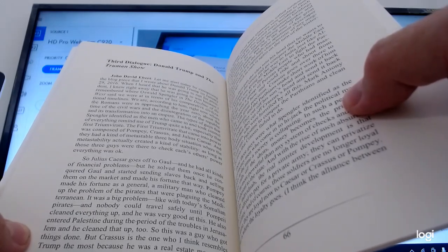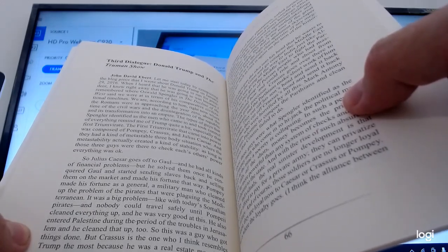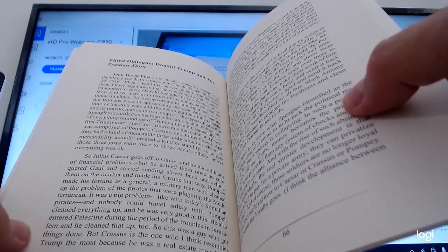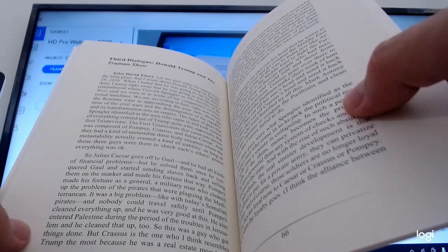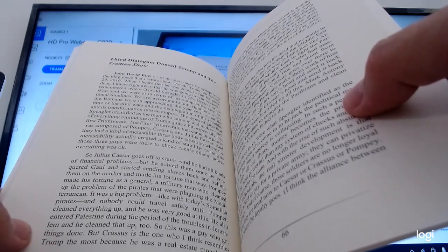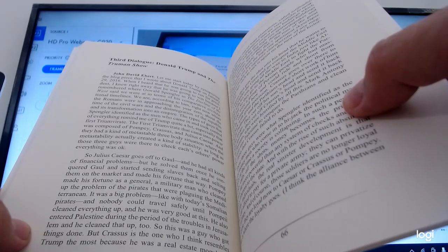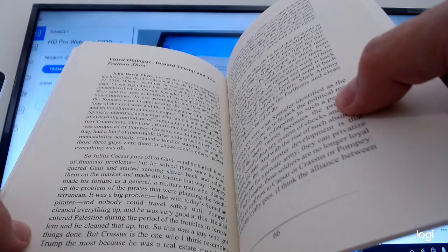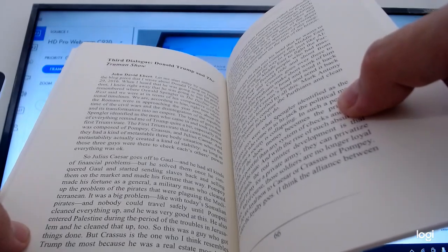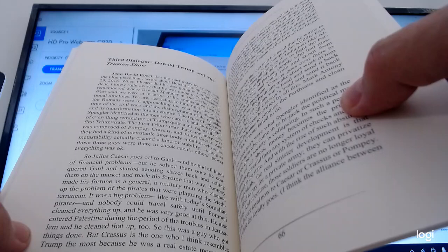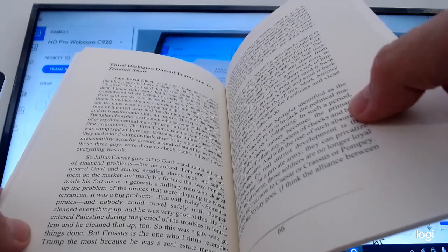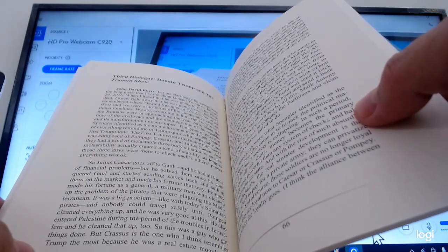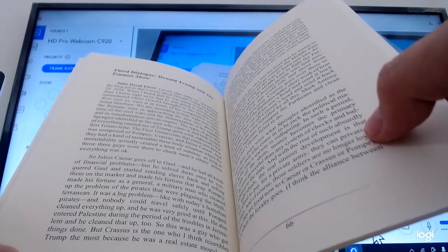Ebert, let me start today by synopsizing the blog piece that I wrote about Donald Trump on January 29, 2016. When I heard that he was going to run for president, I knew right away that he was going to win because I remembered where Oswald Spengler and the Decline of the West said we were at in terms of his comparative civilizational timelines. We are, according to him, right now where the Romans were and approaching the year zero, about the time of the civil wars and the disintegration of the republic and its transformation into an empire.